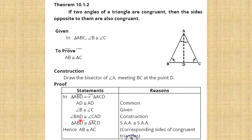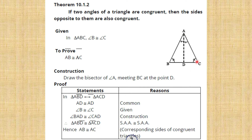The third statement: angle BAD is congruent to angle CAD. The reason is construction — because AD is the bisector of angle A.